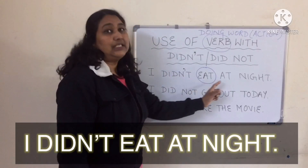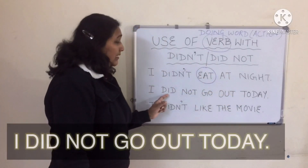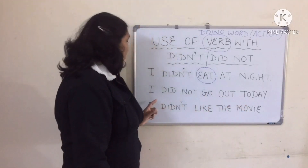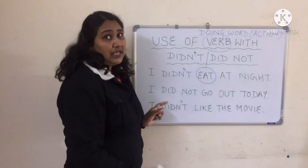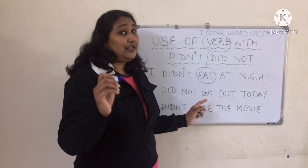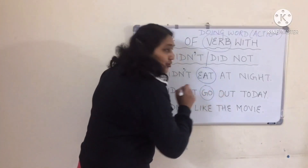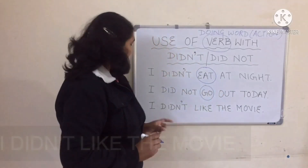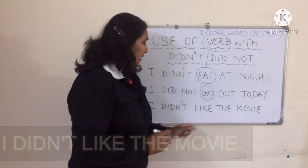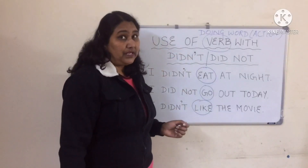For example: 'I didn't eat at night.' 'I did not go out today.' Please do not say 'I did not went out today' — that's absolutely wrong. The correct form is 'I did not go out today.' 'I didn't like the movie.'